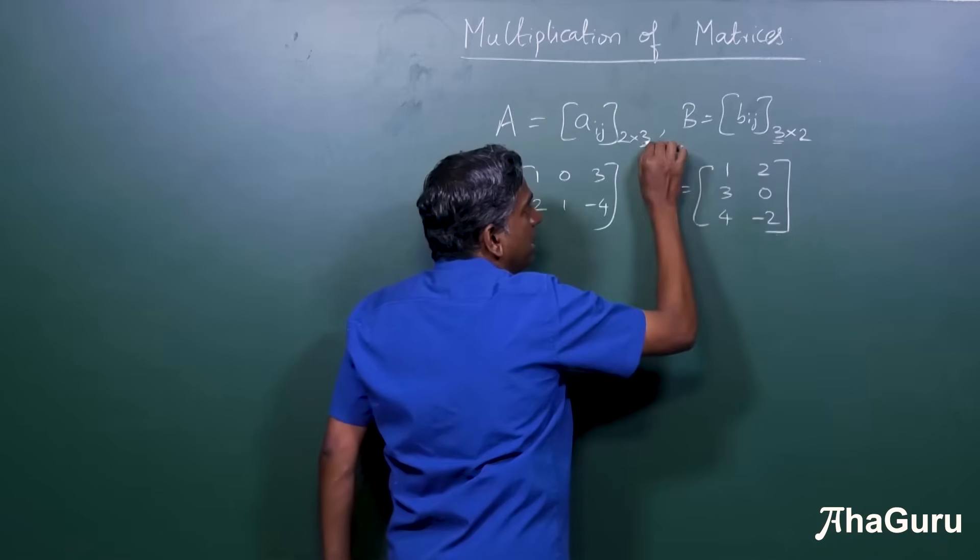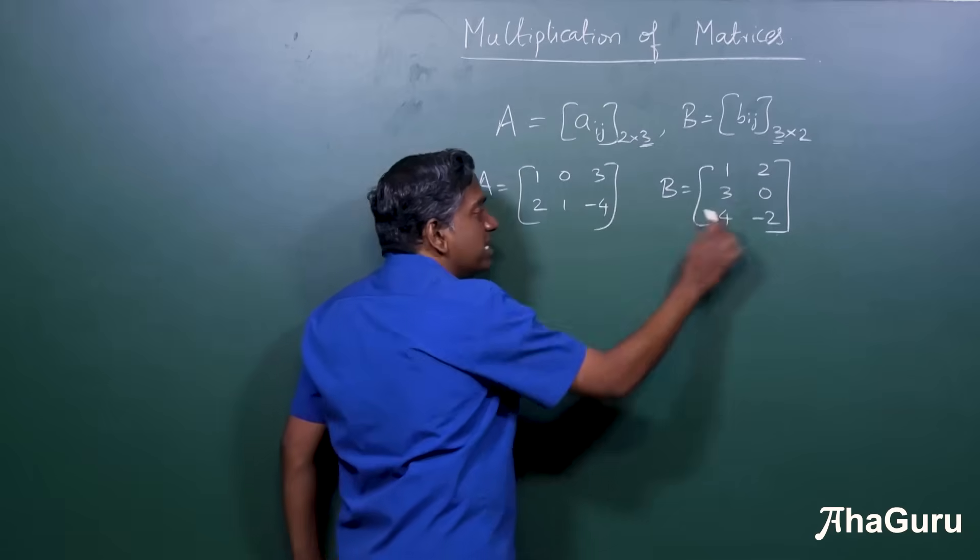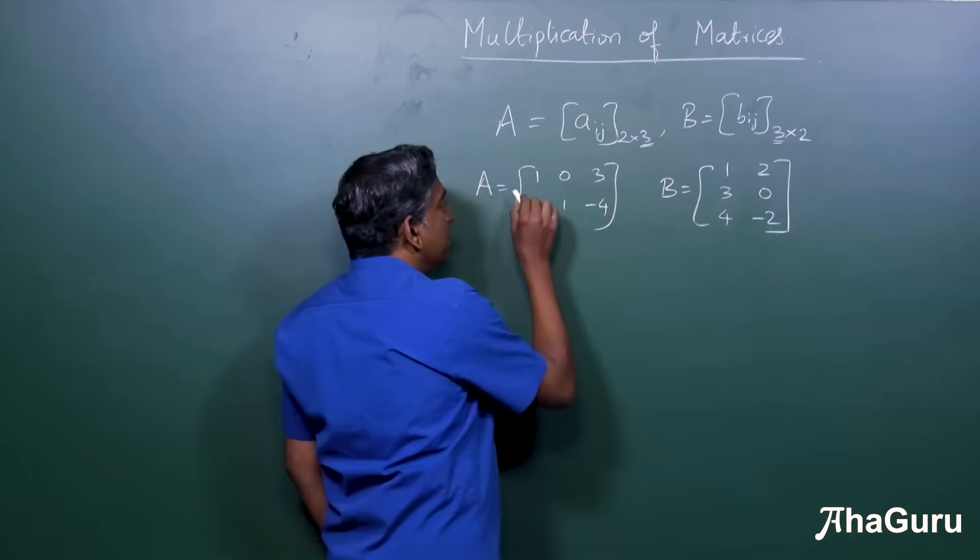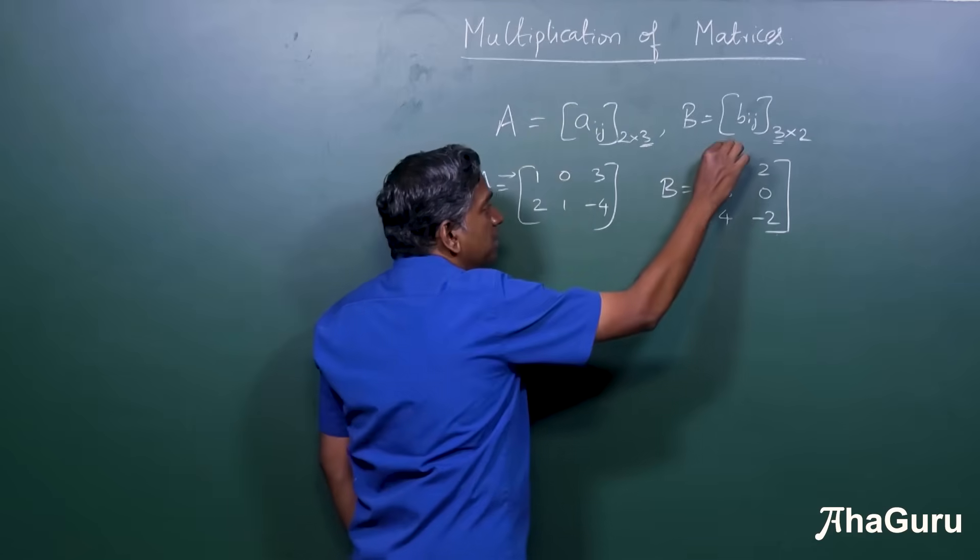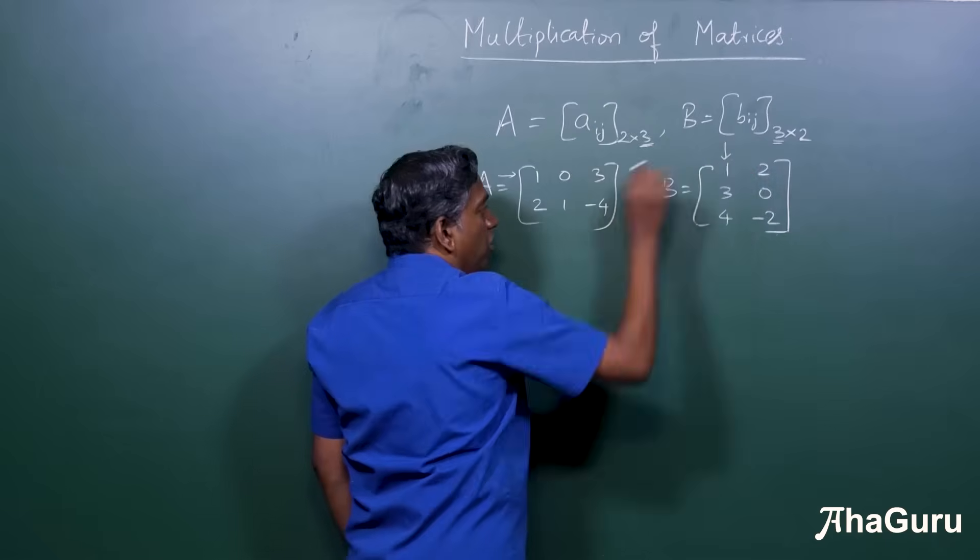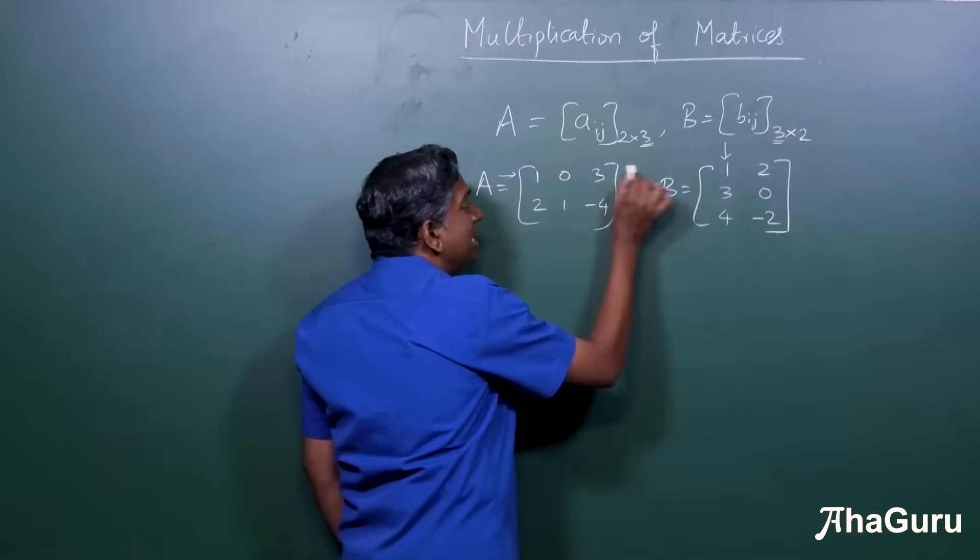The point here is, this is 3 and this is 3. That's what is very, very important. When it is like that, then the way multiplication is defined is, you take the first row of A and multiply it by the first column of B. What do you mean by multiply?